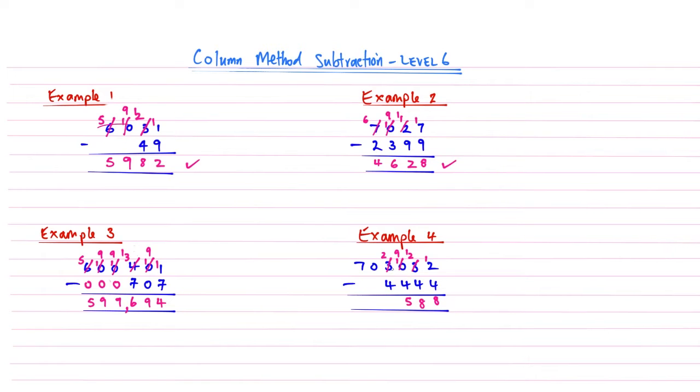2 subtract 4, we've got another chain to sort out. That becomes a 6, then we reduce that by 9, and that becomes another 12. 12 subtract 4 is 8, and then 9 subtract nothing and 6 subtract nothing. 9 subtract nothing is 9, and 6 subtract nothing gives me 6. That's 698,588.